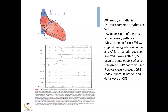The other reentry we call AV reentry, not AV nodal. In this arrhythmia, the AV node itself is part of the circuit, and we have one accessory pathway. This is the second most common SVT, with the most common form being WPW. Typically, the antegrade goes through the AV node and the accessory pathway is retrograde — you will see inverted P-waves after the QRS. In the atypical form, the antegrade goes through the accessory pathway and retrograde through the AV node, and you will see the P-wave closely precedes the QRS. This is what you see in WPW: short PR, delta wave at the QRS.